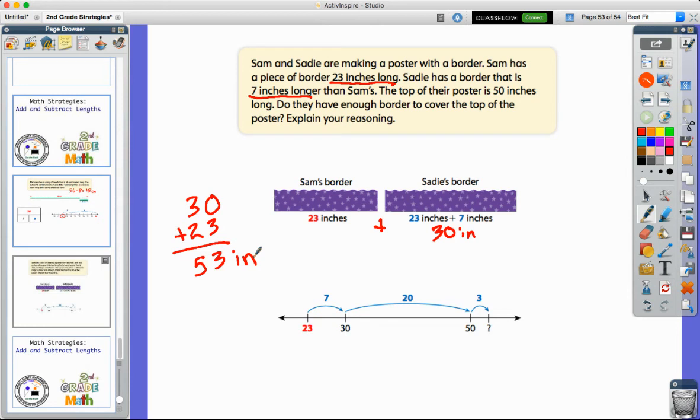We see the same thing done here at the bottom. We see that they use the open number line to start with Sam's amount, which was 23. They jumped the seven inches, which was the seven inches more for Sadie's border, which got us to 30. Then they jumped 23 more. And so they jumped a total of 27 plus three makes it 30. So we started with the 23. We jumped a total of 30 and we ended up at 53.